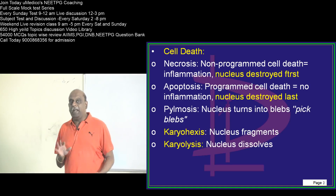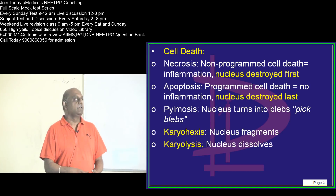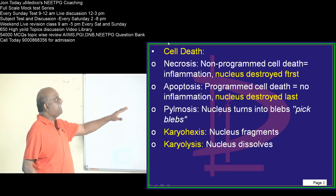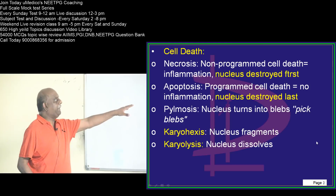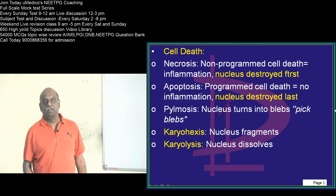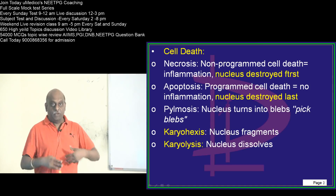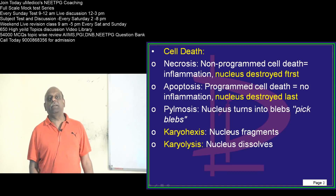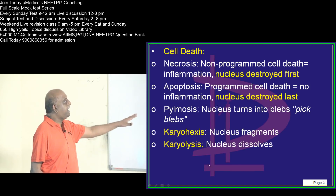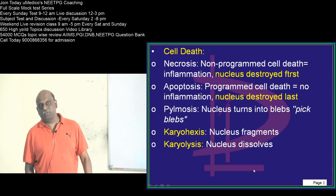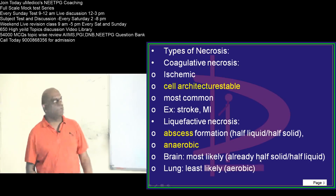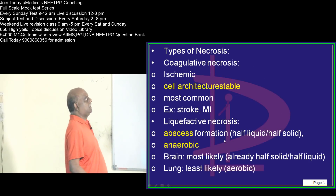What is pyknosis? The nucleus turns into blebs. Karyorrhexis means the nucleus fragments, and karyolysis means the nucleus dissolves.